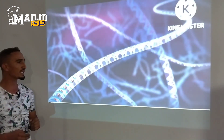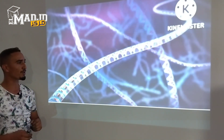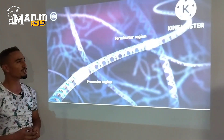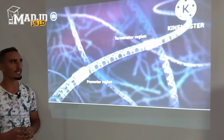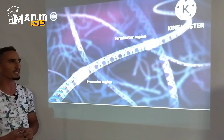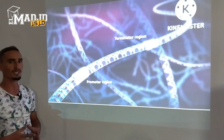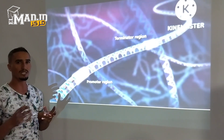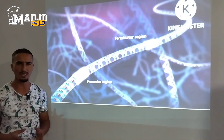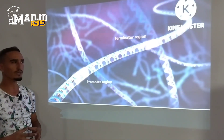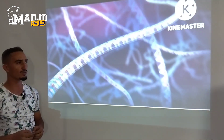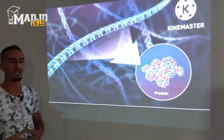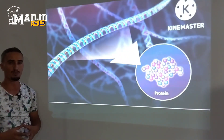A gene is a continuous strand of nucleotides containing a region that codes for an RNA molecule. These regions begin with a promoter and end in a terminator. Genes also contain regulatory sequences that can be found near the promoter or at a more distant location. For some genes, the encoded RNA is used to synthesize a protein in a process called gene expression.